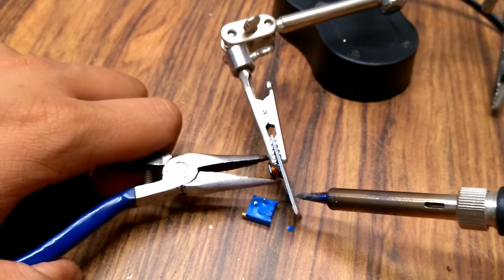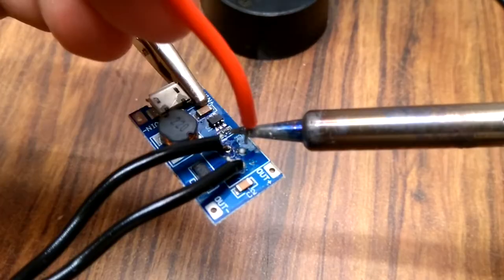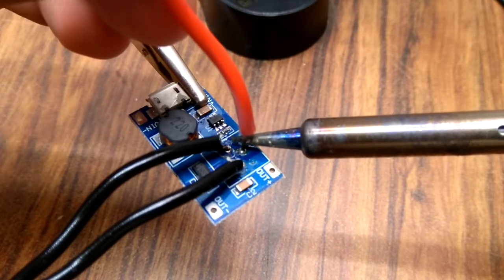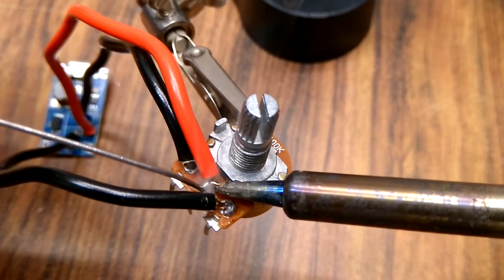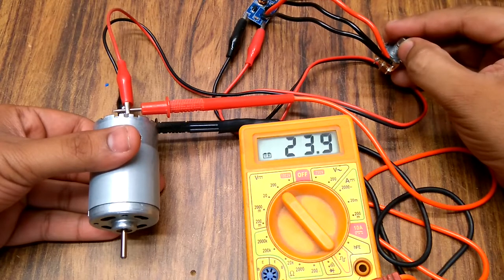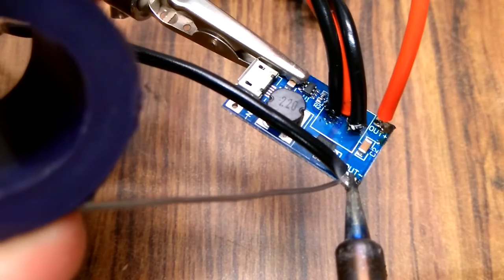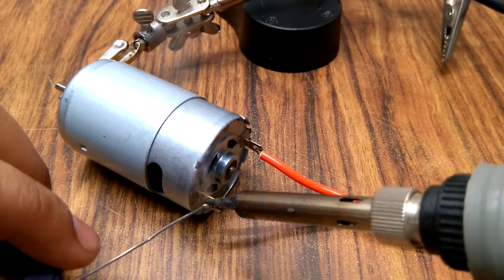I unsoldered the potentiometer from the module and soldered wires to a single turn potentiometer. I tested the setup with my multimeter and it worked fine. I then soldered wires from the module to the motor.